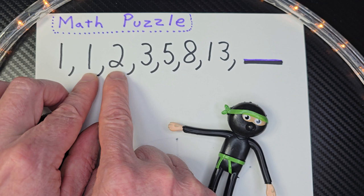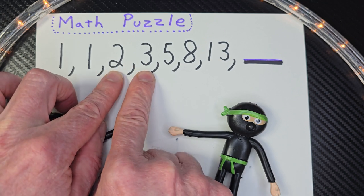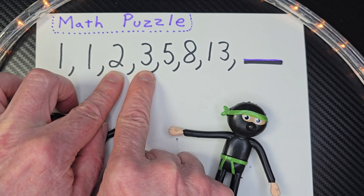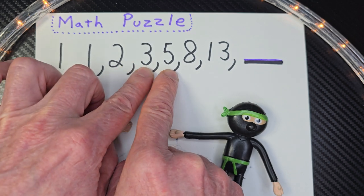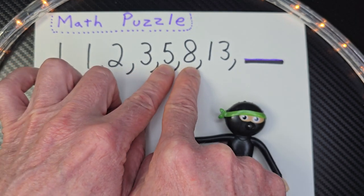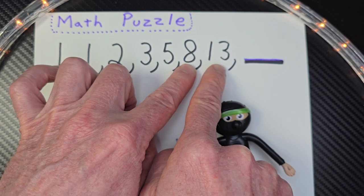So two plus one would be three. And then here, two plus three would equal five. And five plus three would equal eight. Eight plus five would equal thirteen.